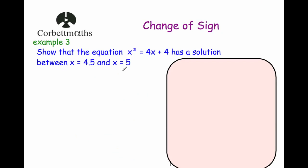Example 3 has a few subtle differences. The equation x squared equals 4x plus 4 doesn't equal 0 as required, so we subtract x squared from both sides to get 0 equals 4x plus 4 minus x squared. Also, we've been asked to show there's a solution between x equals 4.5 and x equals 5 — showing that the boundary values don't have to be integers; they can be decimals.